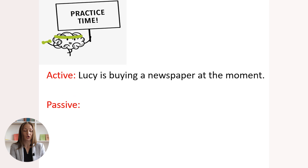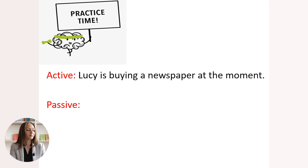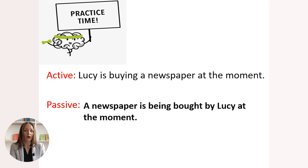Next sentence: 'Lucy is buying a newspaper at the moment' — present continuous. How do we transform it into passive? Please pause and rewrite. Are you done? Let's see: 'A newspaper is being bought by Lucy at the moment.' If you wrote it this way, you already know the usage of the passive voice construction.